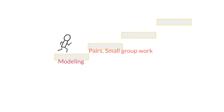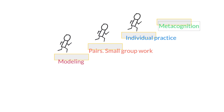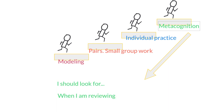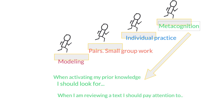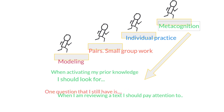After modeling and working in pairs, the next step is for students to practice on their own. Finally, engage students in a metacognition activity where they reflect on the process. You can create reflection stems such as: 'When doing this activity, I should look for...', 'When reviewing a text, I have to pay attention to...', 'When activating my prior knowledge, I should...', or 'One question I still have about what we did today is...' Allow your students to really reflect on what they did and how to improve it for next time.